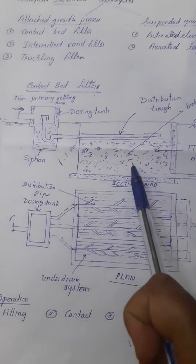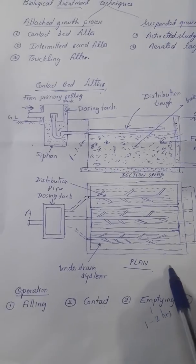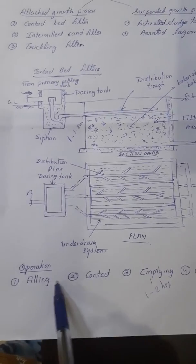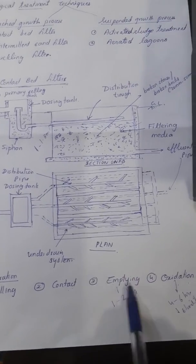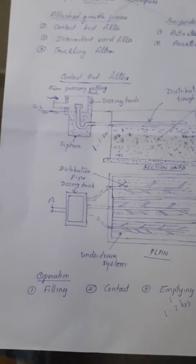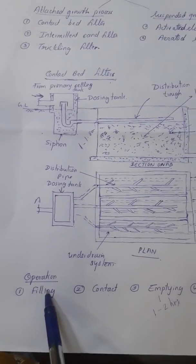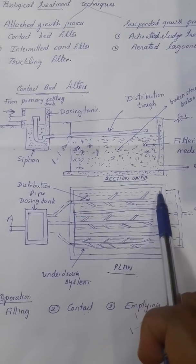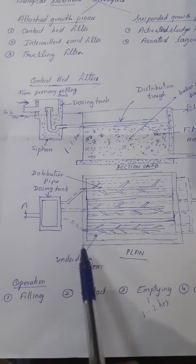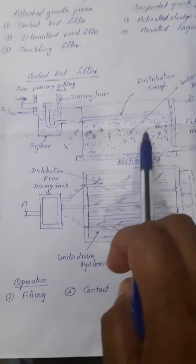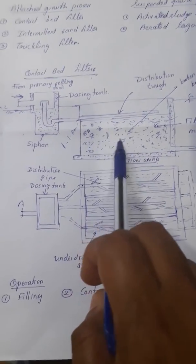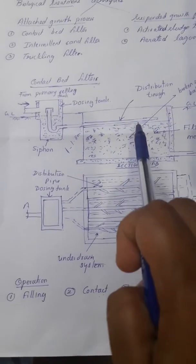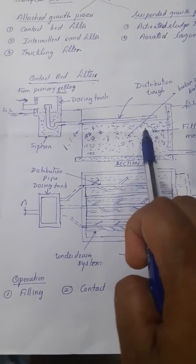The operation of this contact bed: the complete cycle of operation contains four operations—filling, contact, emptying, and oxidation. First is filling. For this filling, the outlet valve of the under drain is closed, and the tank is slowly filled with sewage effluent through the dosing tank. The depth of sewage effluent is 5 to 10 cm over the top of the bed. This filling usually takes about 1 to 2 hours.